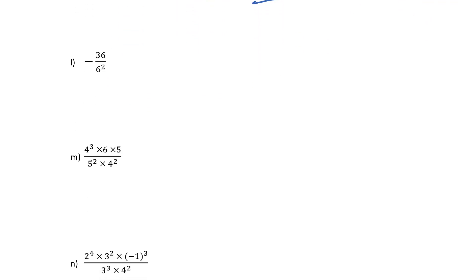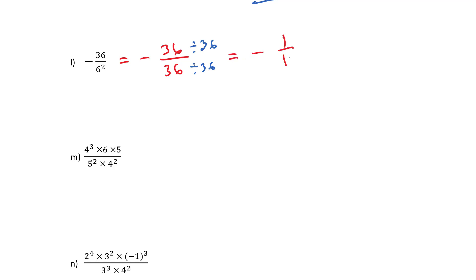Next: minus 36 over 6 squared. This is easy — 6 squared is 36. We can take a 36 out of the top and a 36 out of the bottom — it basically cancels out to 1 over 1, so our answer is minus 1.